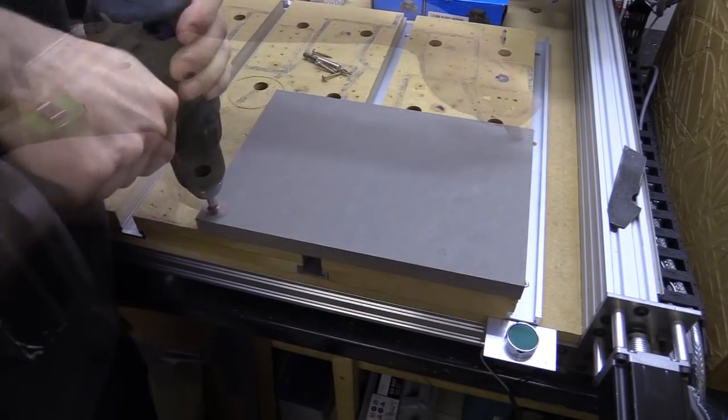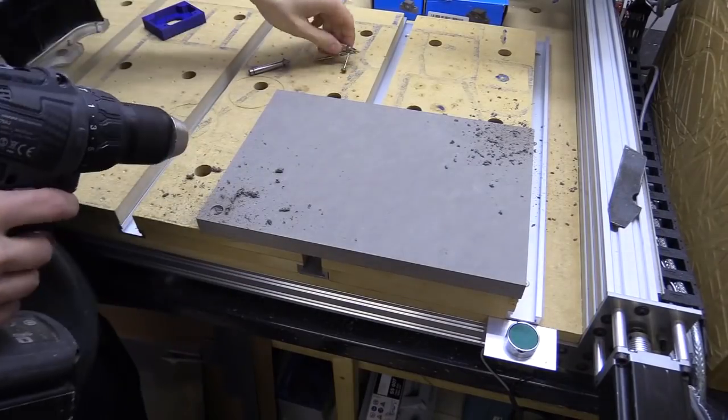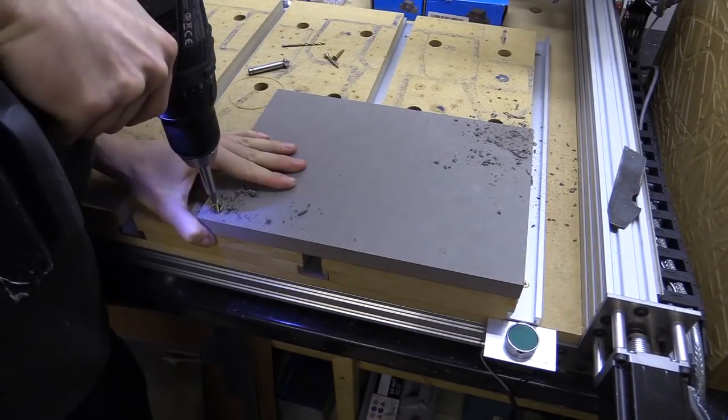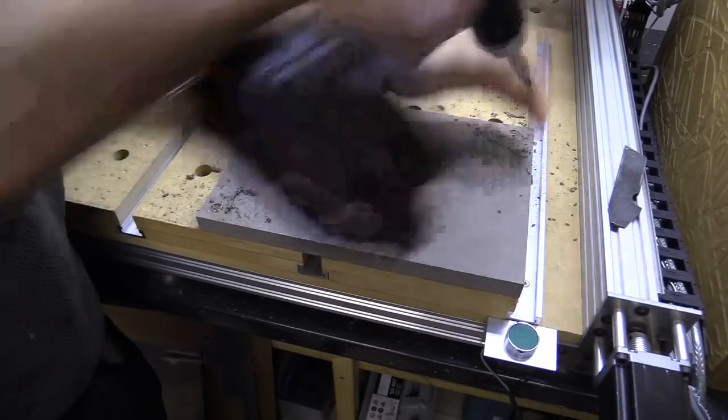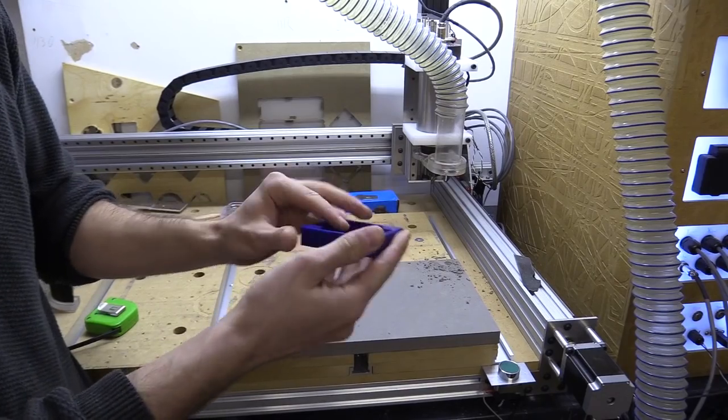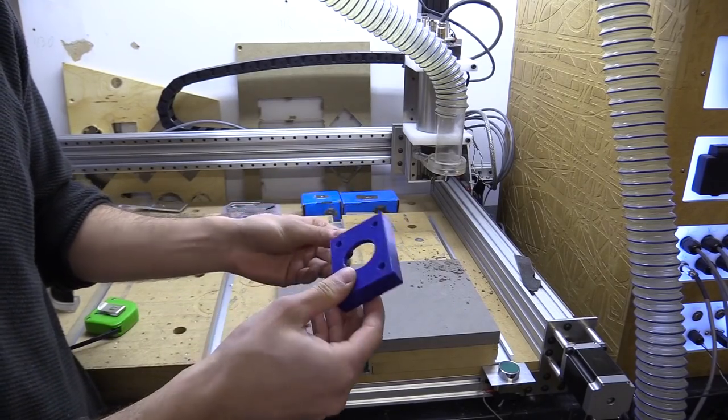The first thing I need to do is secure this down, so I'm going to drill a couple of holes and screw it to the waste board. I'm going to now area clear the main chunk of this component, as well as the opening for the button.